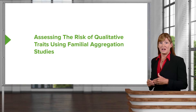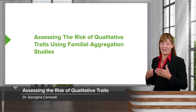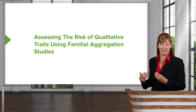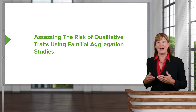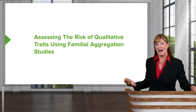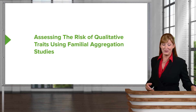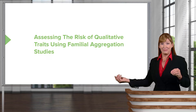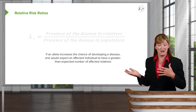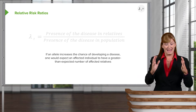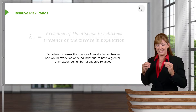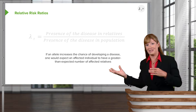When we assess the risk of a qualitative trait — these are yes or no traits, either it's there or it's not — we can use familial aggregation studies. We presume that if an allele increases the chance of developing a disease, we expect an affected individual to have a greater than expected number of affected relatives.